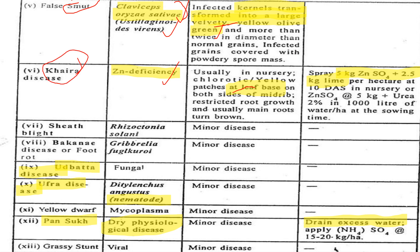Zinc deficiency is a disease that starts yellowing from the leaf base. To control it, you add 5 kg zinc sulfate plus 2.5 kg lime. Remember: if you add 5 kg zinc sulfate, you add 2.5 kg lime. This is an important exam question already featured in Punjab exam videos.